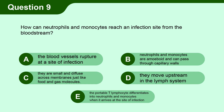Question 9. How can neutrophils and monocytes reach an infection site? A. Neutrophils and monocytes are amoeboid and can pass through capillary walls. C. They are small and diffuse across membranes just like food and gas molecules. D. They move upstream in the lymph system. E. The portable T lymphocyte differentiates into neutrophils and monocytes when it arrives at the site of infection.